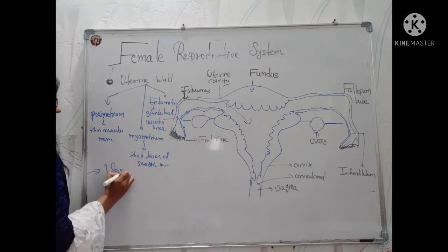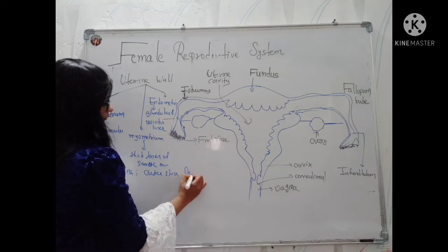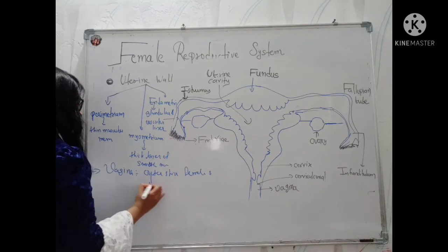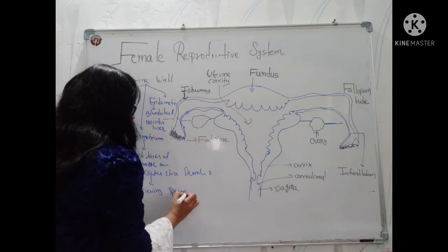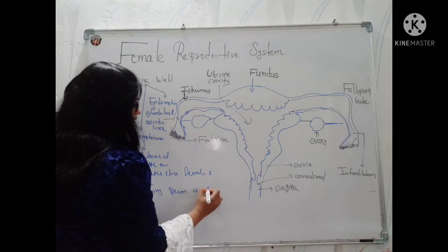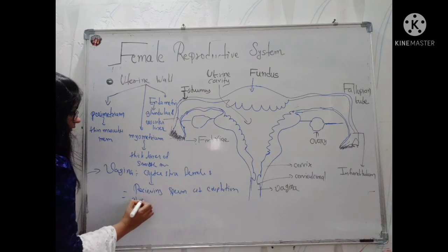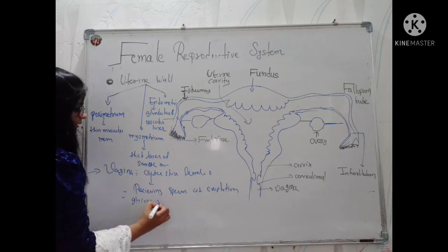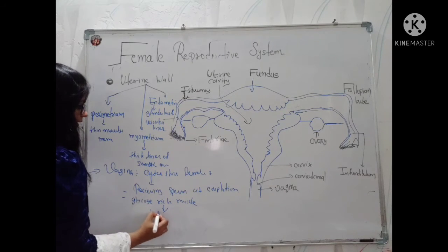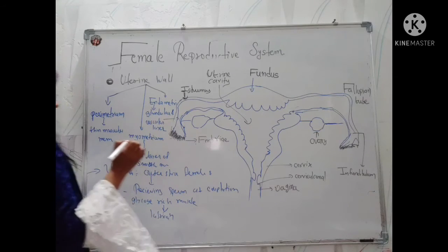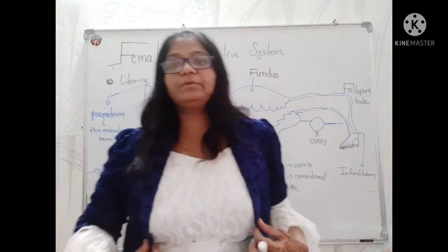Then comes the vagina, which is the outer structure of the female reproductive system and is responsible for receiving sperms at the time of copulation. The vagina has glycogen-rich muscles which are responsible for lubrication at the time of copulation. This covers the primary and secondary female reproductive system organs.